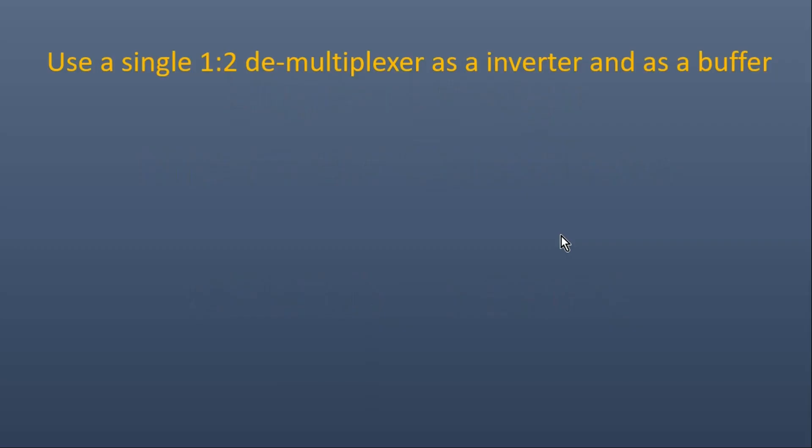The first question is on your screen, where you have to use a single 1×2 demultiplexer and implement it as both an inverter and a buffer. The condition is you must use a single 1×2 demultiplexer for each implementation. Those who know its answer, please write it down in the comment section, otherwise I am going to tell you its answer.